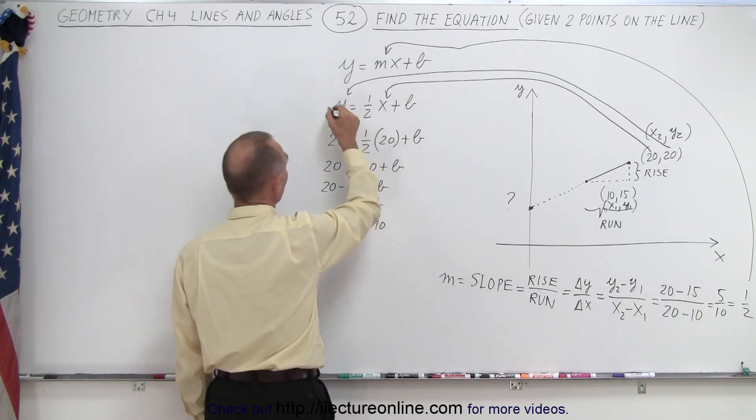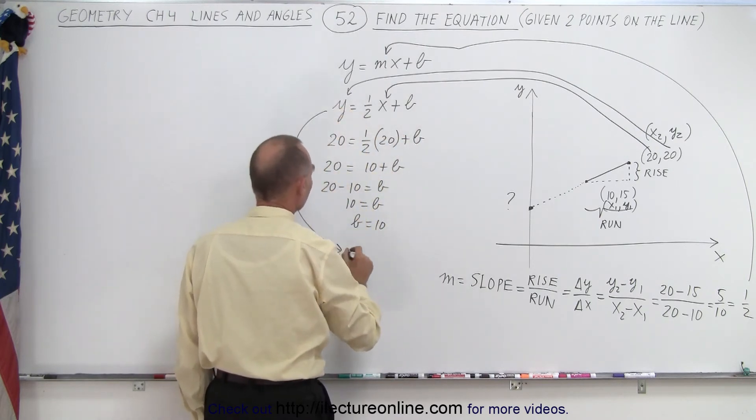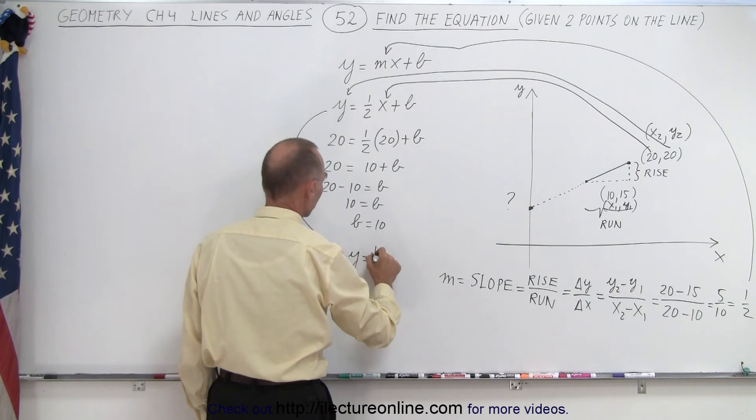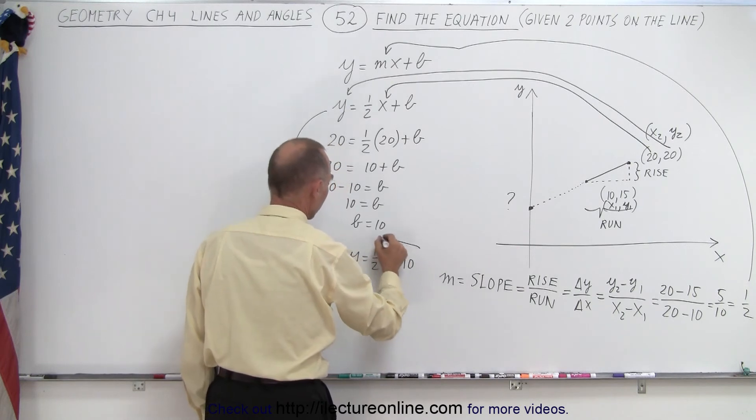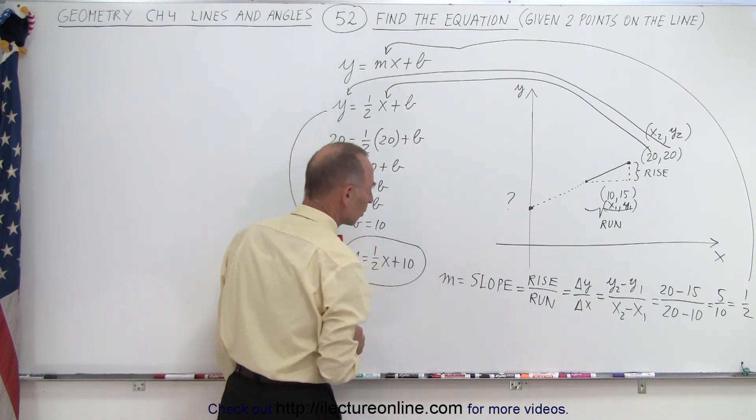And then you plug that back into your equation. So then you rewrite your equation and you have y equals 1 half x plus, instead of b, you write what b is equal to, which is 10. And there's the equation you were looking for.